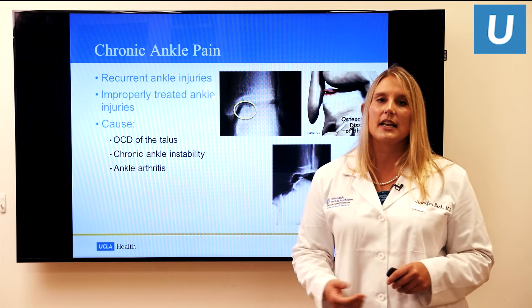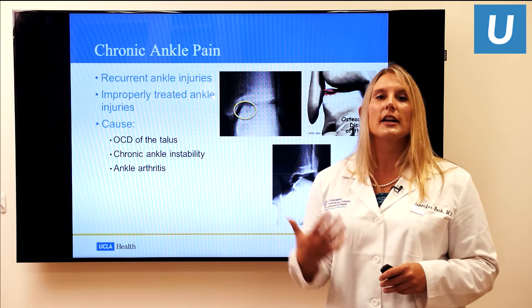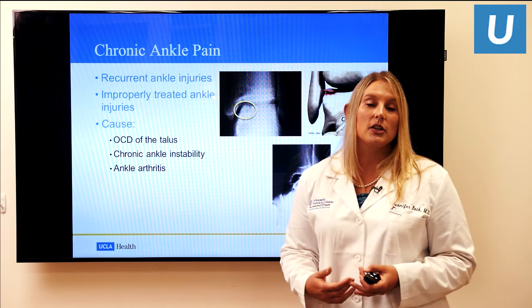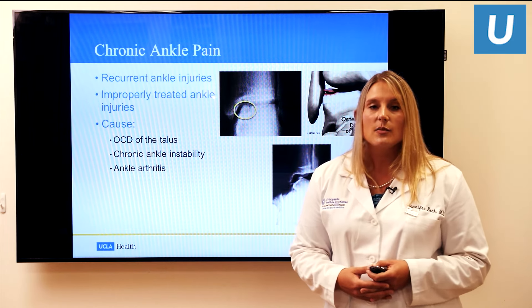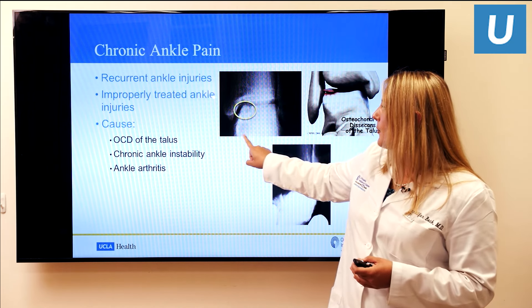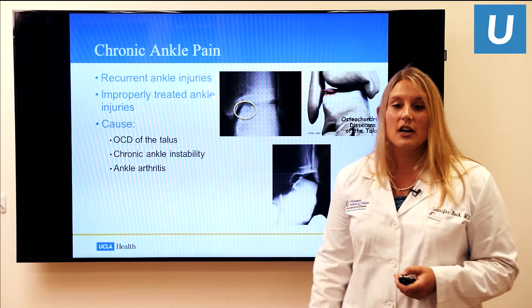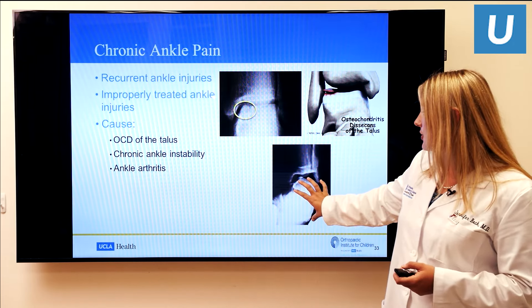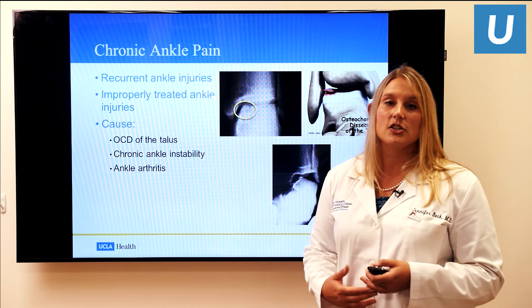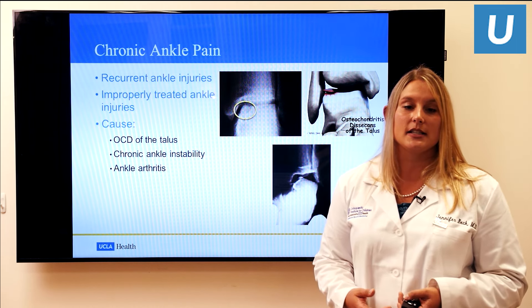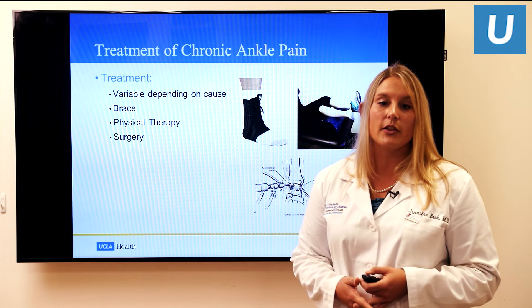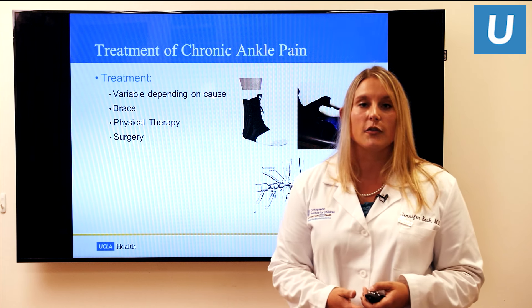For long-standing chronic ankle pain, people with recurrent ankle sprains can develop persistent problems. The most common cause we see is OCD — osteochondritis dissecans — in the talus, the ankle bone on the bottom. Sometimes this causes instability where the bone actually shifts out of place. Our concern is that long-term, if either of these conditions continues, you would have wear and tear of your ankle joint leading to ankle arthritis. Treatment is most often a brace and physical therapy, but depending on how long it's been going on, surgery may be a possibility.